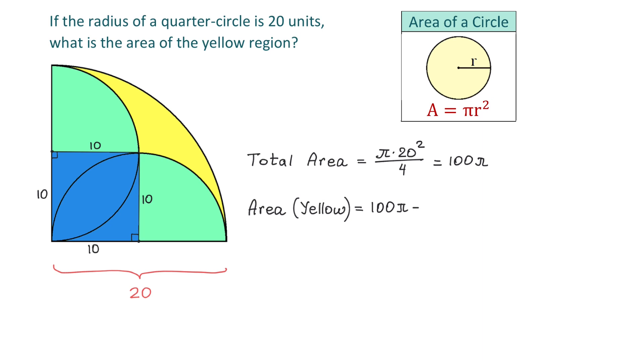Then we will subtract the area of the square which is 10 squared. Then because the radius of each of these quarter circles is 10, we will subtract twice pi times 10 squared over 4.